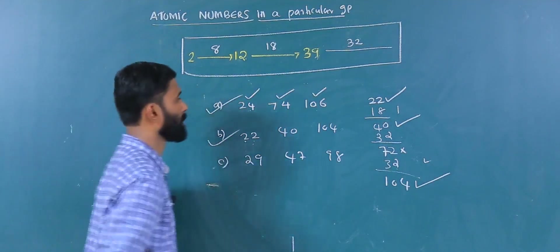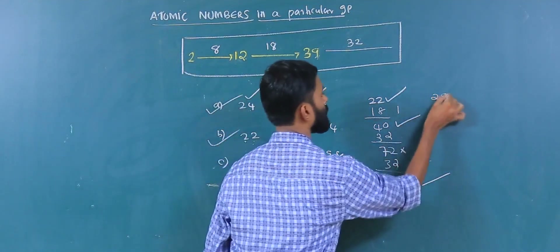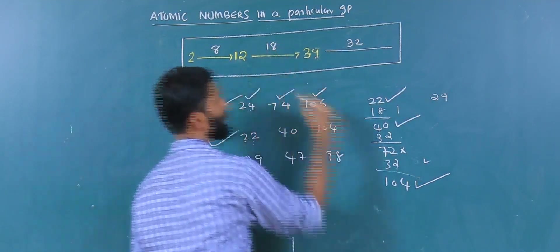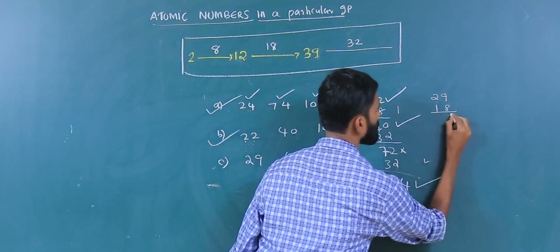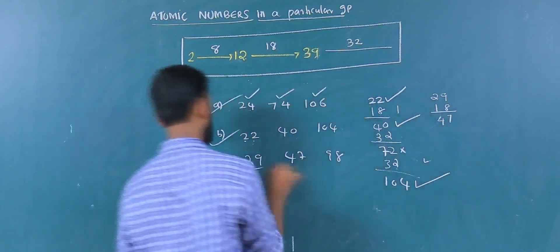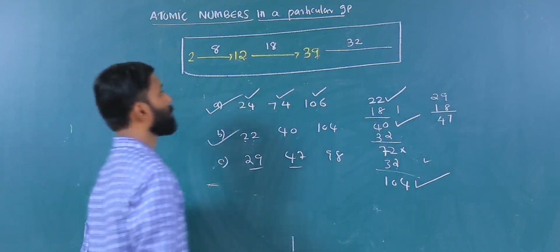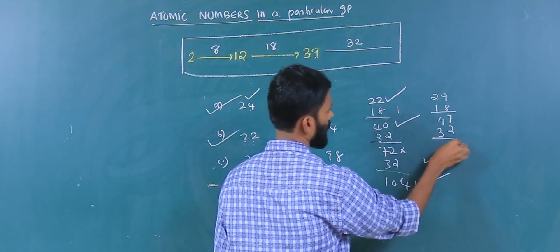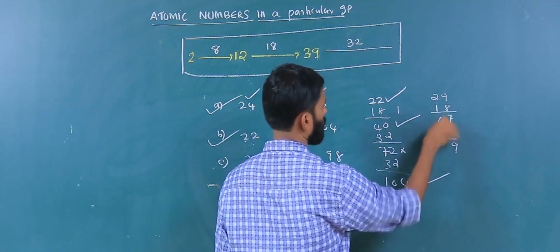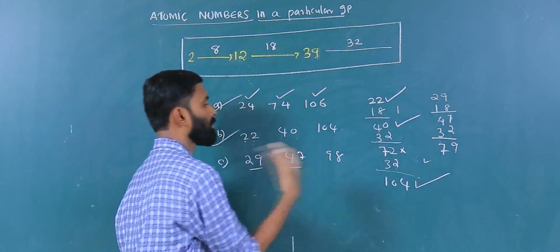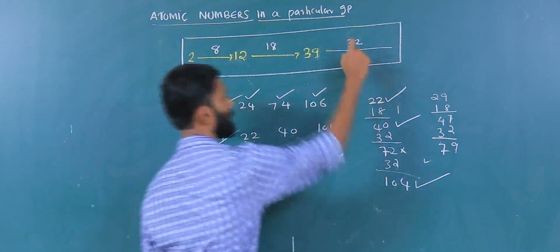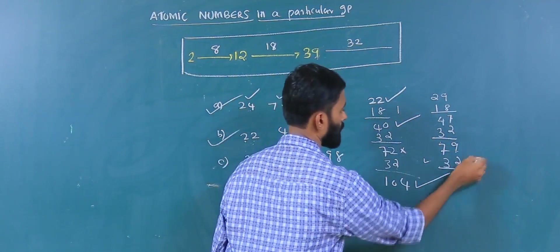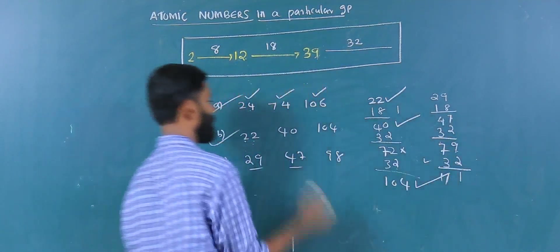Next: 29, 47, 79. Starting with 29, which is in the second section. We add 18 to get 47. So 47 is given. Then 47 plus 32 equals 79. 79 is not given initially, but then 79 plus 32 equals 111. So the group elements are 29, 47, 79, and 111. These correspond to copper, silver, and gold in the same group.